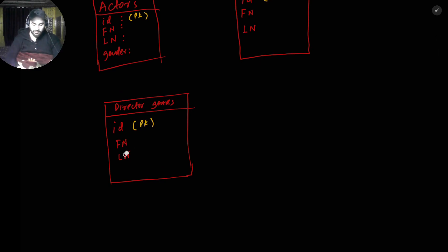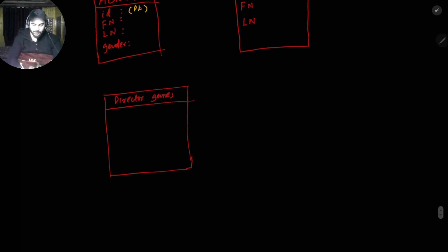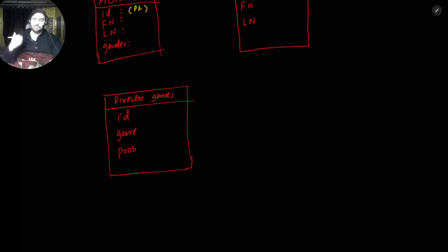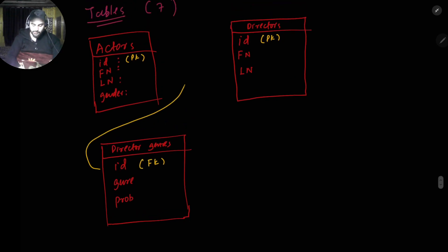In director_genres, the attributes are: director_id, then genre (the type of movie the director makes), and then probability. Probability means the frequency that the director is involved in making that type of movie — a number between 0 and 1. For example, 0.5 means half the movies are comedy. Here director_id is a foreign key pointing to the directors table.